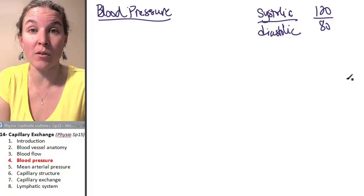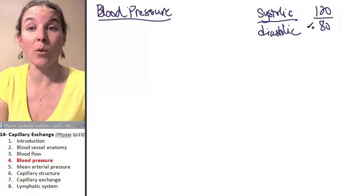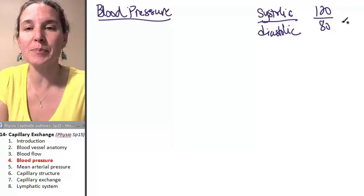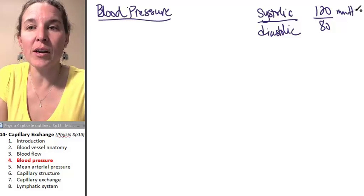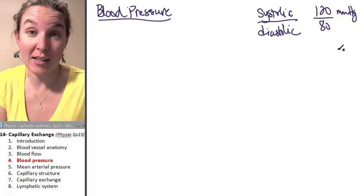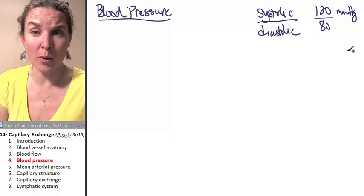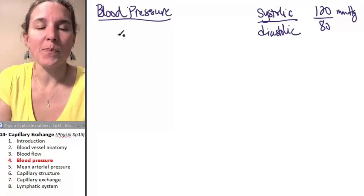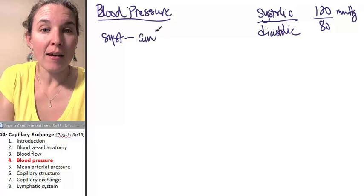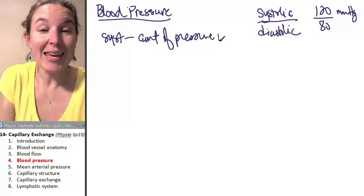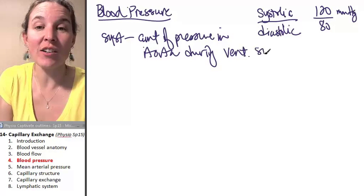We expect 120 over 80 as our average blood pressure, although there's significant debate and evidence that perhaps our values should be lower. Blood pressure is measured in millimeters of mercury — those are the units we deal with. Systolic pressure is an estimate of the amount of pressure in the aorta during ventricular systole.